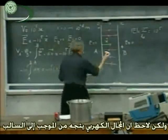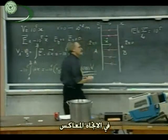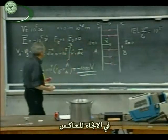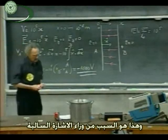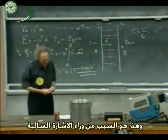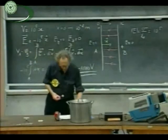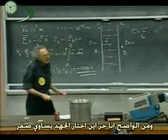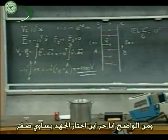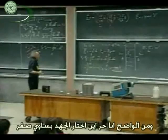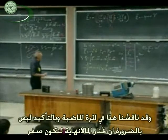But notice the electric field goes from plus to minus, in the opposite direction. And that's always the reason behind that minus sign. Now, clearly, I'm always free to choose where I set my zero potential — we discussed that last time.